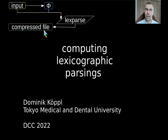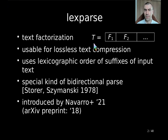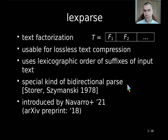So what is LexParse? LexParse is a text factorization, meaning that it factorizes your text into factors f1, f2, and so on. It is usable for lossless data compression, and the idea behind LexParse is that it uses the lexicographic order of the suffixes of your input text T. LexParse is a special kind of bidirectional parse, which got introduced by Stora and Szymanski back in the 70s. But LexParse is more recent, meaning that Navarra and others published a journal article last year about it, and the same authors introduced LexParse four years ago in an archive preprint.